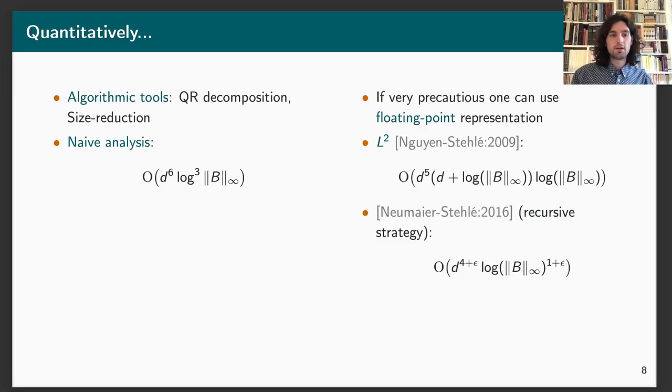If we analyze this algorithm, we will find some dependency which is sextic in the rank and which is cubic in the size of the integers. However, if we are precocious enough, we can use floating point arithmetic instead of exact arithmetic. And that was a first step made by Nguyen and Stehlé in 2009, where they showed that we can do LLL reduction with dependency which is quadratic in the logarithm of the size of the elements appearing in your basis. More recently, Neumaier and Stehlé showed that with some recursive strategy, you can go down to some karatsuba or quasi-karatsuba dependency in the dimension and quasi-linear dependency in the logarithm. However, this algorithm is purely theoretical and the constants appearing in the big-O are too big to be concretely implemented.